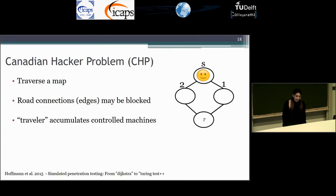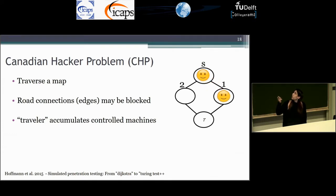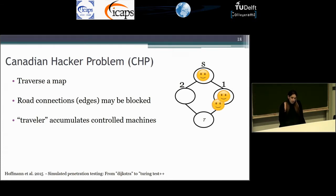The Canadian Hacker problem is based on the Canadian Traveler problem. We have a map; the attacker is on the S node and wants to reach the T node. You can do that by going through one or two intermediate nodes to T. However, in these settings the edges may be blocked. The attacker will know if an edge is blocked only when he reaches the node and senses the edge. At start he will try to exploit node one and gain control over it. He stays at S, accumulating the nodes. Then he will try to traverse to T and the edge is blocked, so he will try to attack through the second node. That edge is open and he reaches the goal.